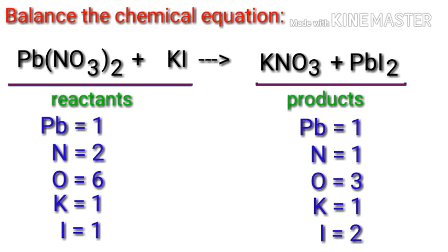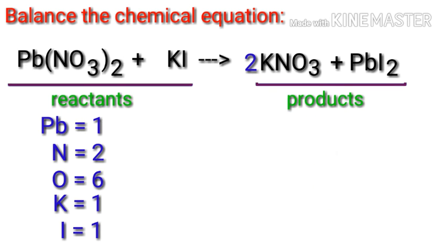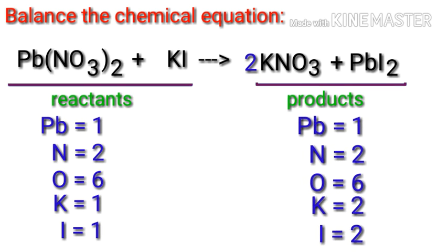In this equation, we need to balance the nitrogen atoms first. To do this, we put a coefficient of two in front of KNO3. The nitrogen atoms and oxygen atoms are now balanced. Next, we need to balance the potassium and iodine atoms by placing a coefficient of two in front of KI.